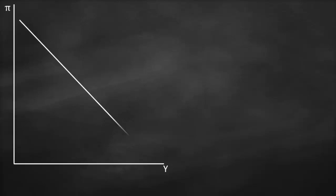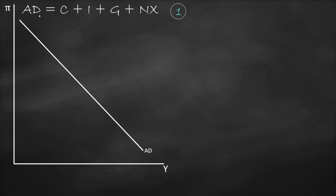Now, which factors will shift our aggregate demand curve either to the right or to the left? Based on the formula — consumption plus investment plus government spending plus net exports — if any of these four variables increase, aggregate demand shifts to the right; if any decrease, it shifts to the left.